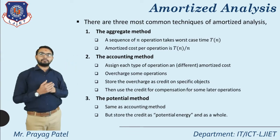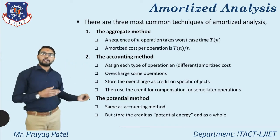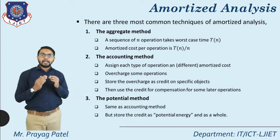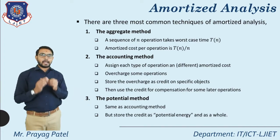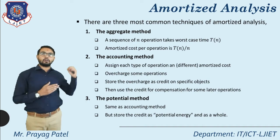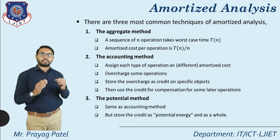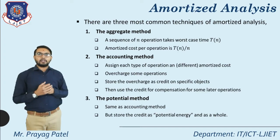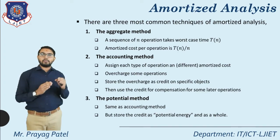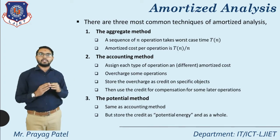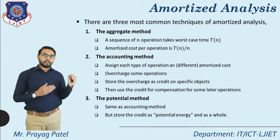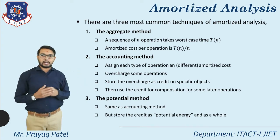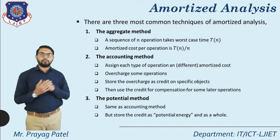The first technique is the aggregate method, the second is the accounting method, and the third is the potential method. In the aggregate method, a sequence of n operations takes the worst-case time T(n). The amortized cost per operation is T(n) divided by n, because we have n operations and total cost equals T(n), so for one operation the cost is T(n)/n.